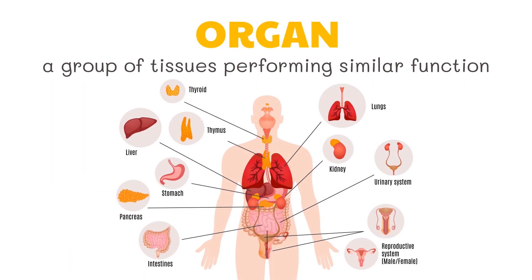An organ is a group of tissues performing a similar function. It is a system of tissues that work together on a larger scale to do certain jobs within an animal's body. Examples of organs are the brain, heart, and lungs. Anatomy is an example of a biological field concerned with this level.